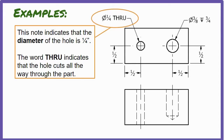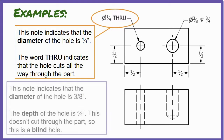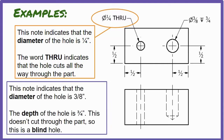This note indicates the diameter of the hole is three-eighths of an inch. The next symbol indicates the depth, which is three-quarters of an inch. Since this hole doesn't cut through the entire part, we call this a blind hole.